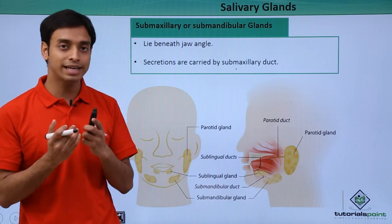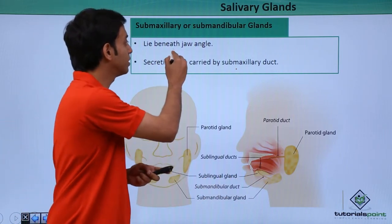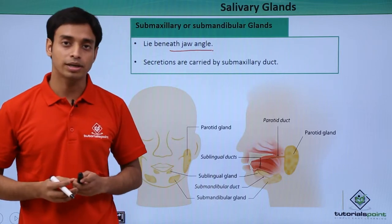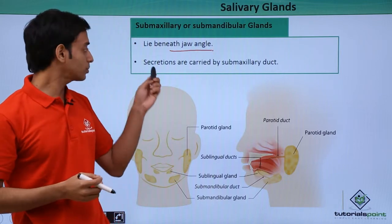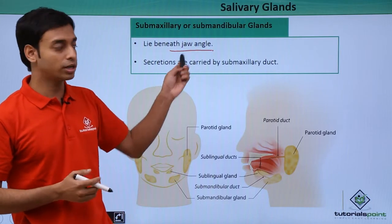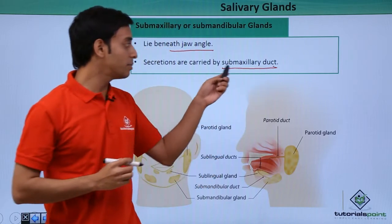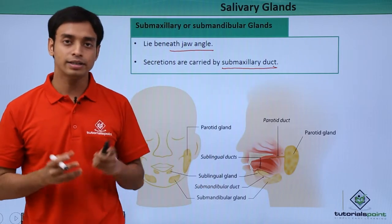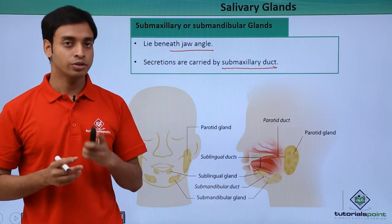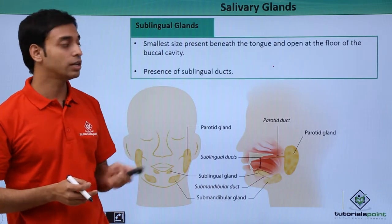After the parotid glands comes the submaxillary, or submandibular, glands. These lie just beneath the jaw angle of the buccal cavity. The secretions of the submaxillary glands are carried by the submaxillary duct into the oral cavity.